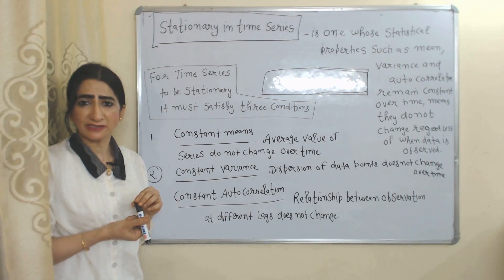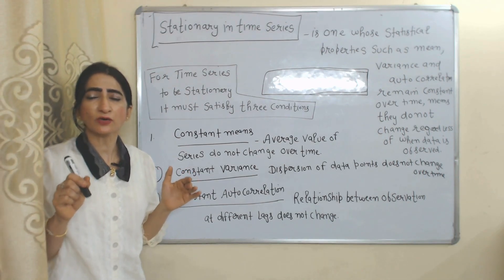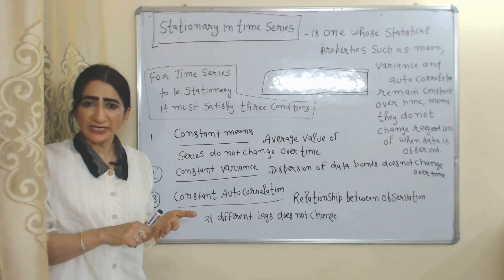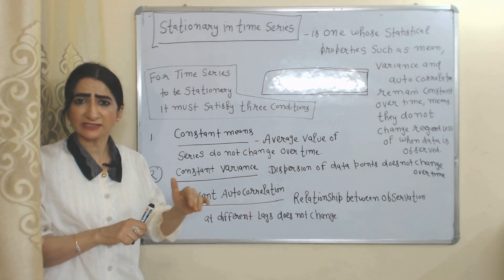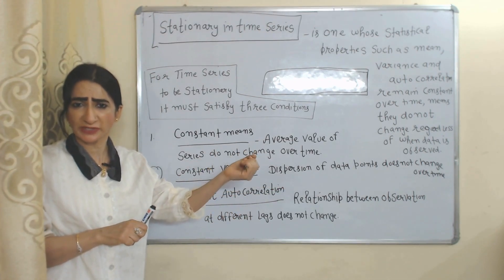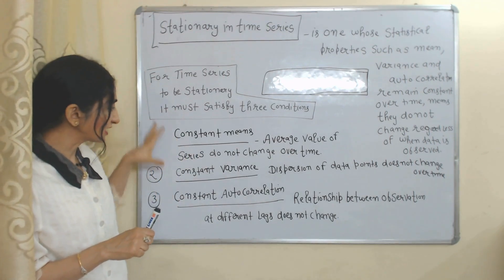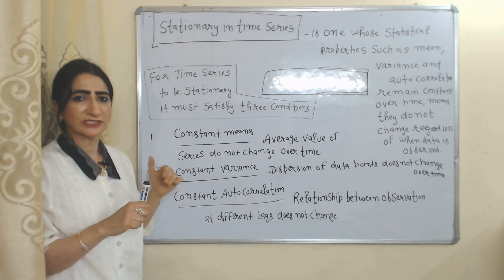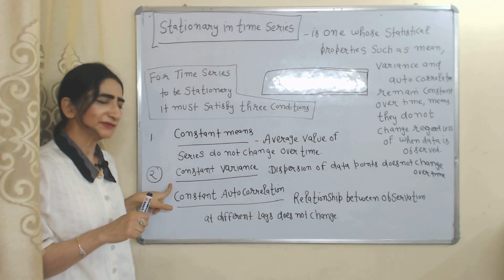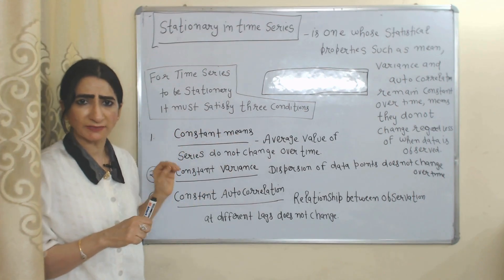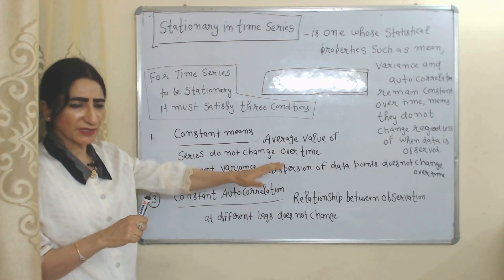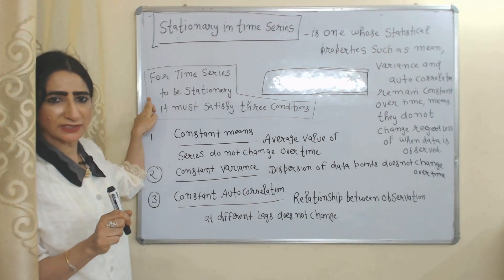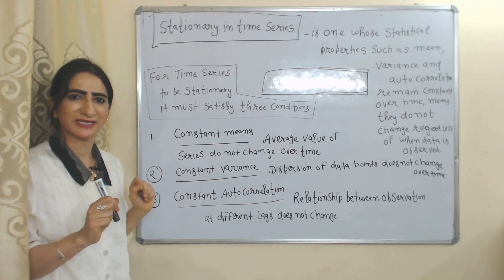In the case of stationarity in time series, mean, variance, and autocorrelation will not change — they will remain constant regardless of when the data is observed. For a time series to be stationary, three conditions must be satisfied: first, constant mean — the average value of the series will not change; second, constant variance — the dispersion of data points will not change; third, constant autocorrelation — the relationship between observations at different lags does not change.